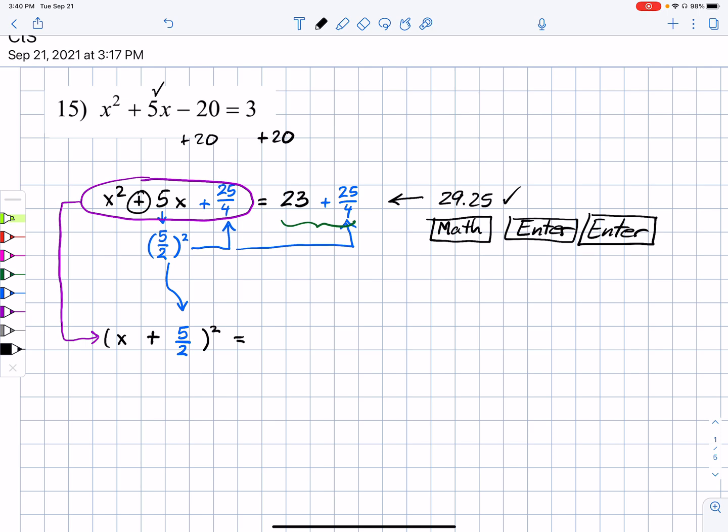So that will return an answer of 117 fourths. So that is the reduced improper fraction of 29.25. And so that's what we bring down here and write on the right side.